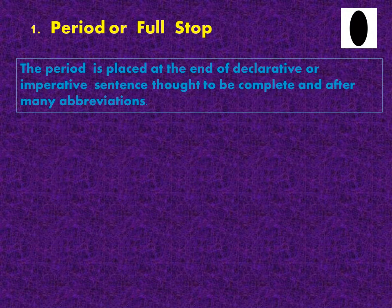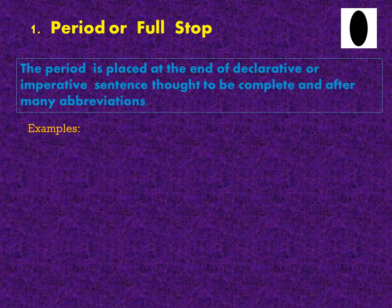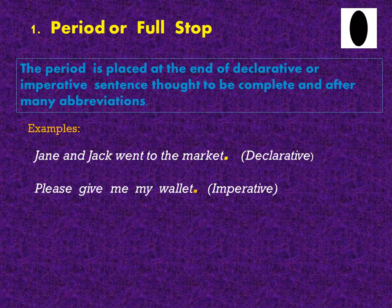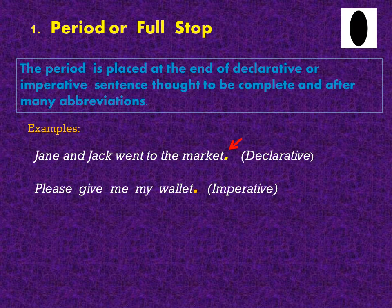The most common type of punctuation mark is the period, or sometimes we call it full stop. The period is placed at the end of a declarative or imperative sentence that is complete, and after many abbreviations. Take a look at these examples. The first sentence: Jane and Jack went to the market. This sentence is a declarative or telling sentence. This is how we place the period or full stop because this sentence is complete.